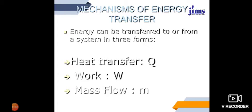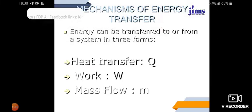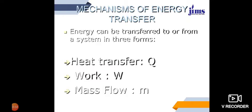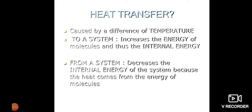Energy can be transferred to or from a system in three forms: heat transfer (Q), work transfer (W), and mass flow. Heat transfer is caused by a temperature difference. For example, if we keep a hot cup of coffee in a closed room, at some point the temperature of the coffee and the room will reach equilibrium — the coffee cools to the room temperature. Heat transfer to a system increases the internal energy of its molecules.